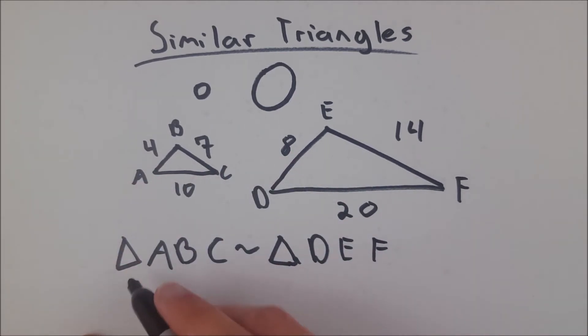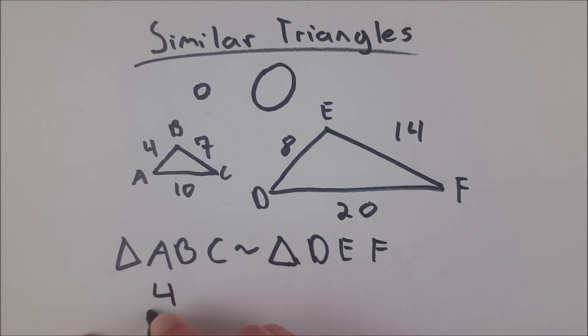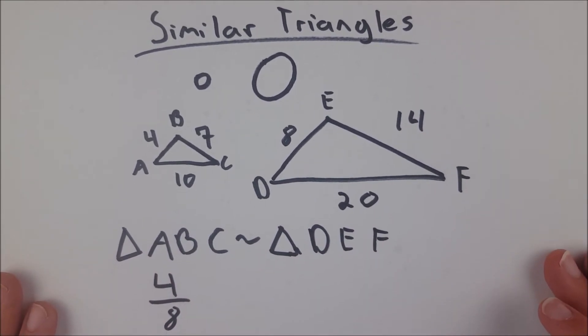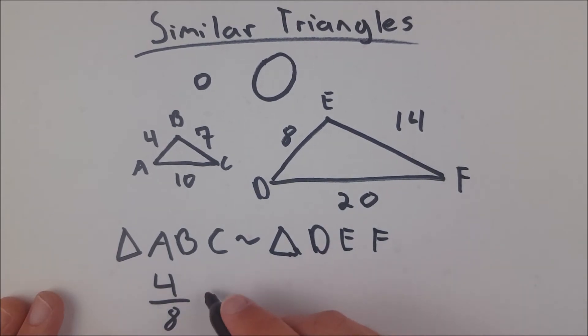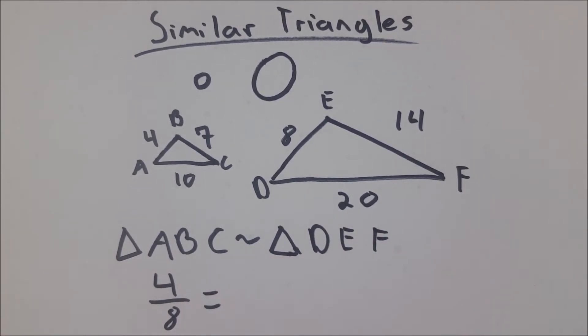AB divided by DE, that's a ratio we get 4 over 8. We could reduce it to one half, but I'm just going to leave it as 4 over 8. Now, that should be equal to any other ratio we look at between corresponding sides within these triangles.